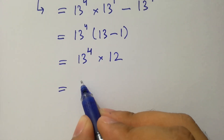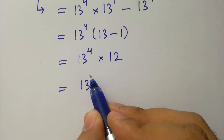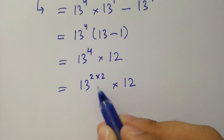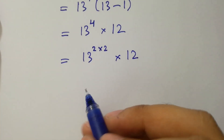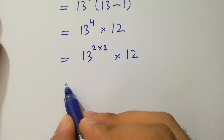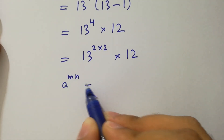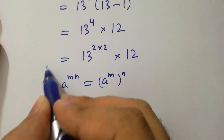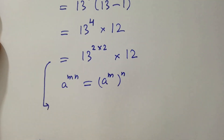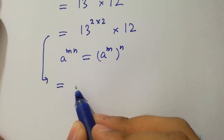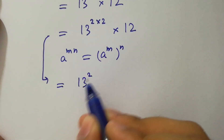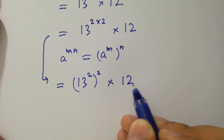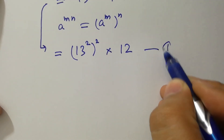This is the same as 13 to the power 2 times 2, times 12, since 2 times 2 is 4. Using the rule a to the power mn equals a to the power m to the whole power n, we have 13 to the power 2 to the whole power 2, times 12. Let's call this the first equation.